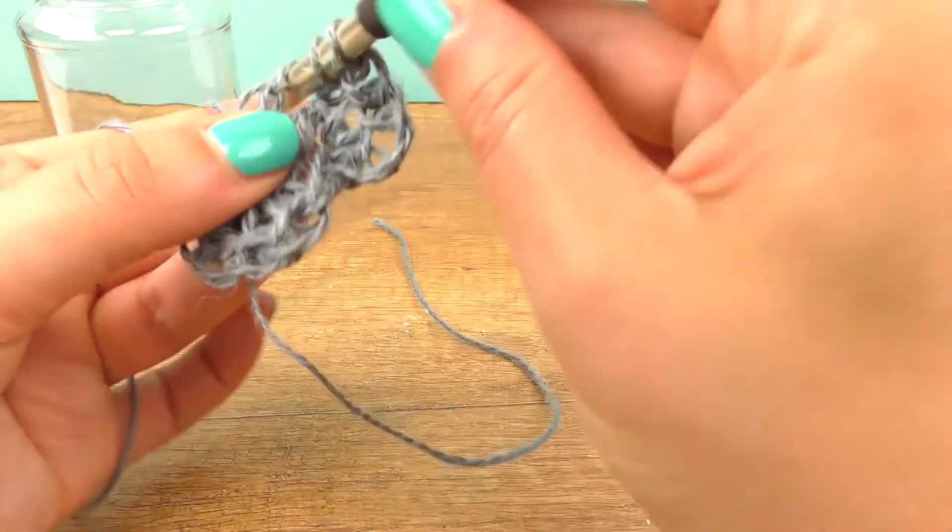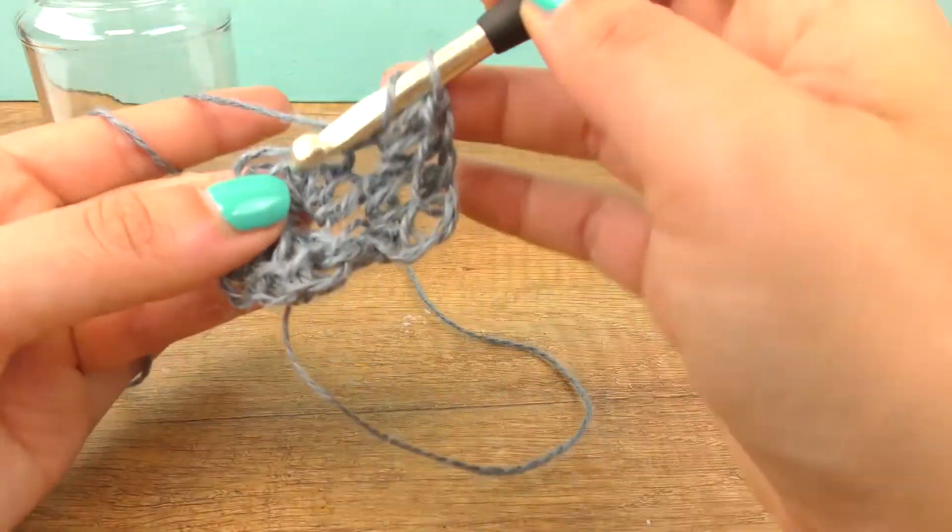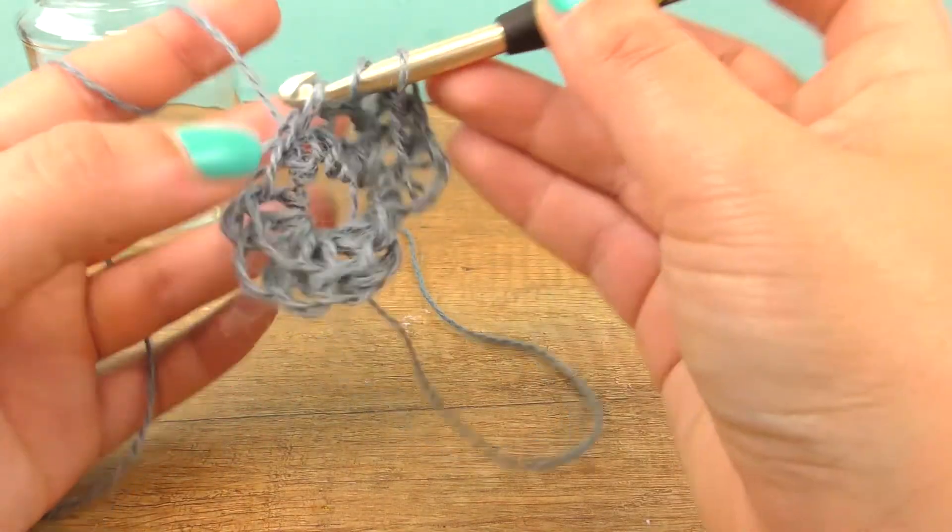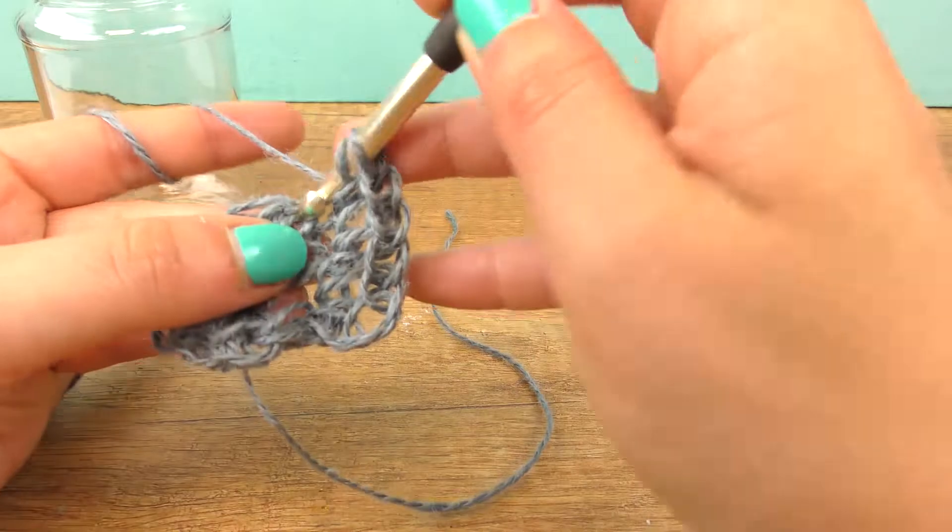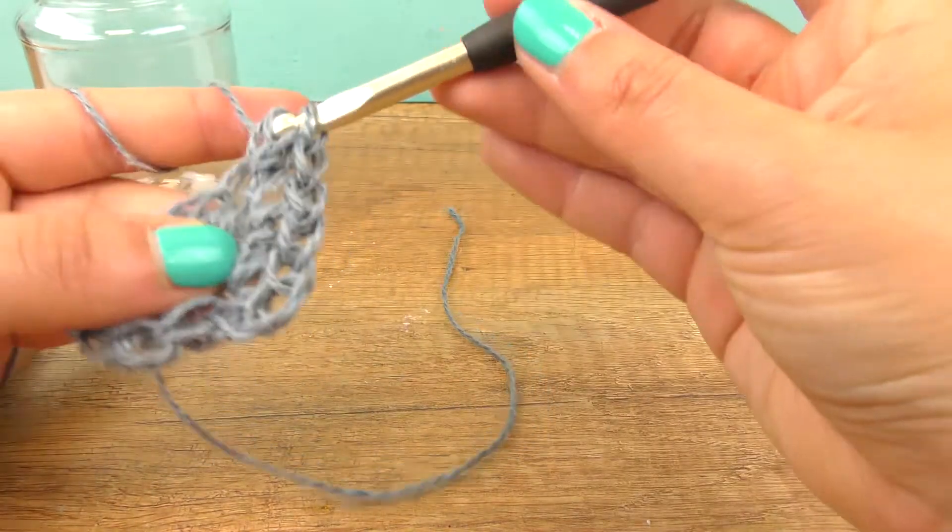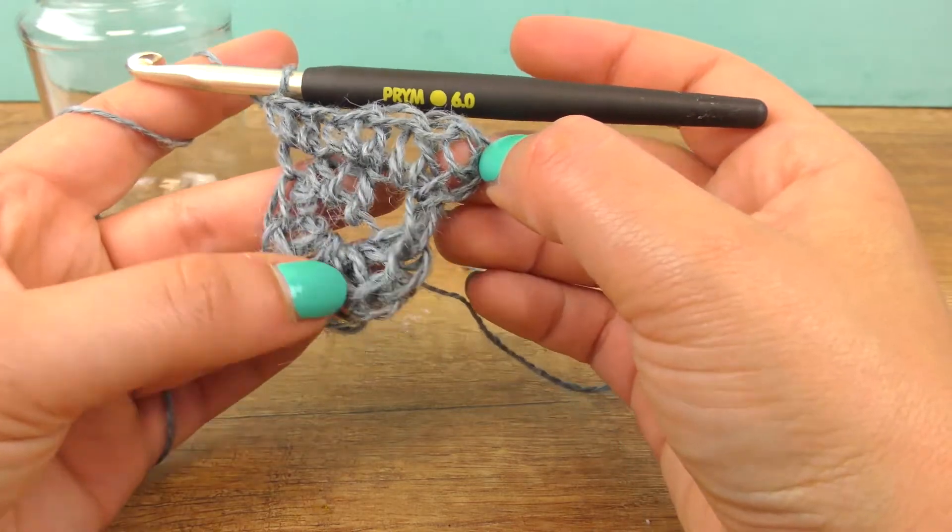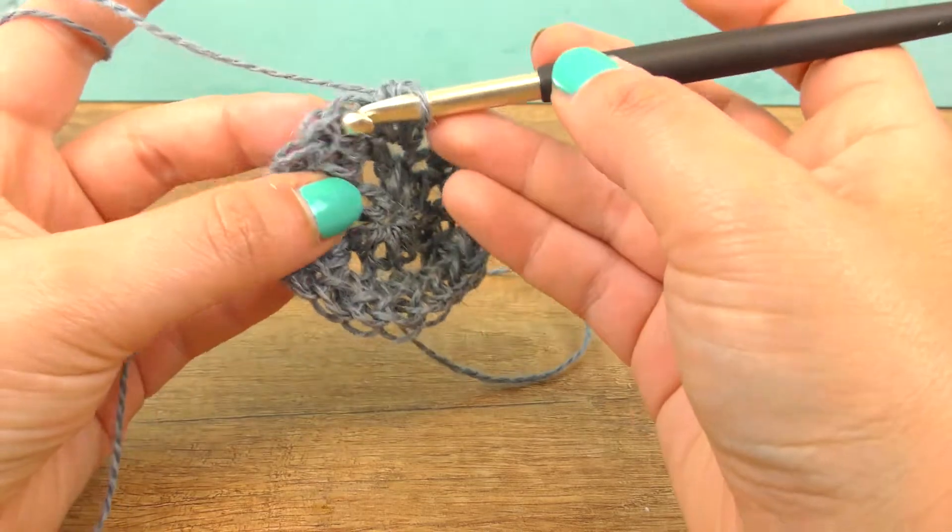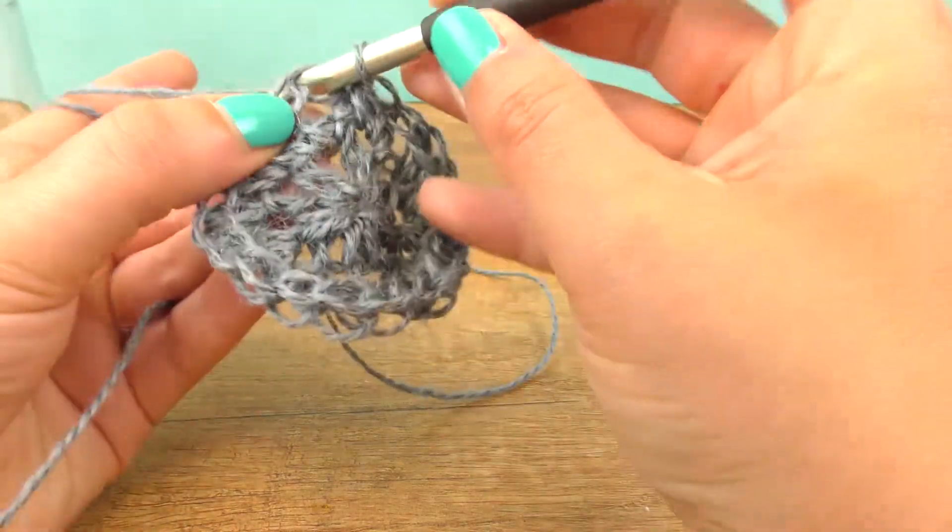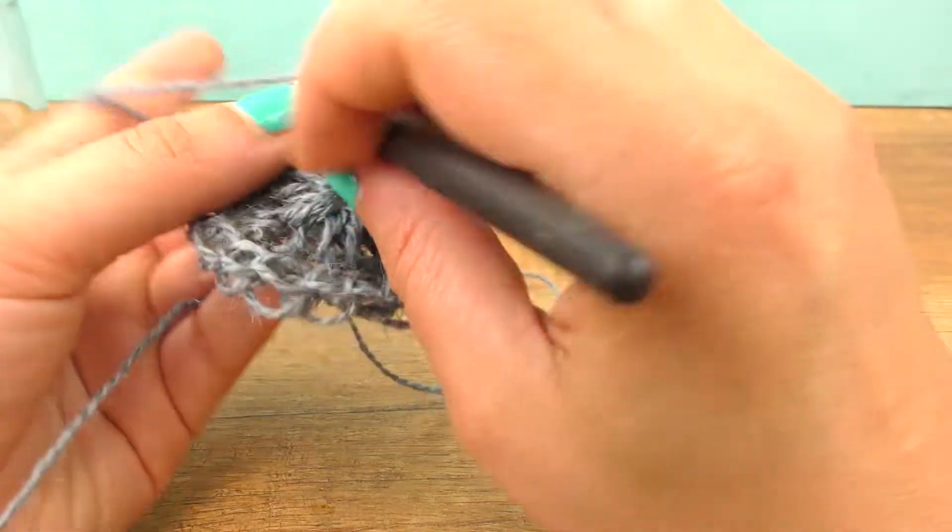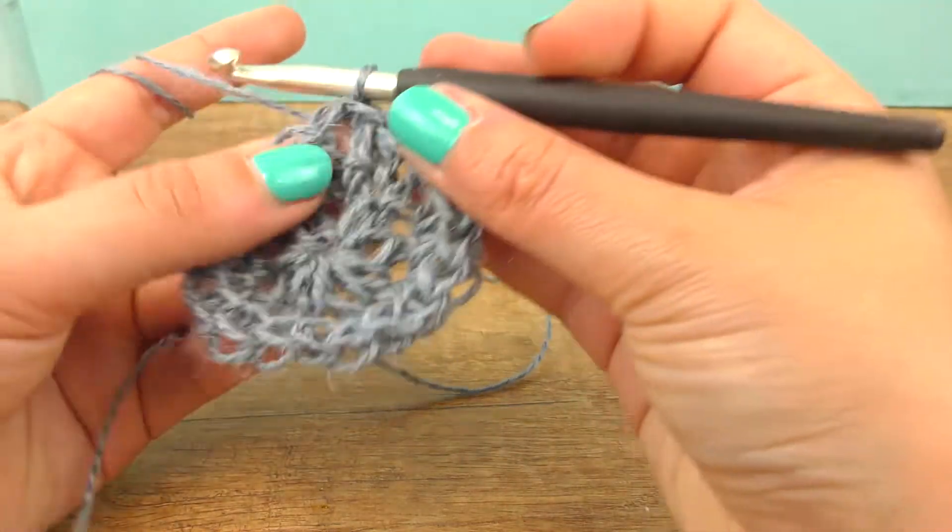Half treble, pull nicely, and start again with two chains. Again, do another half treble into the same spot. Throughout the whole round, just go with half trebles. So always two for each spot.